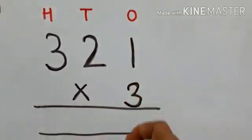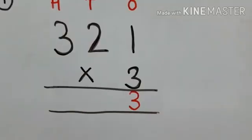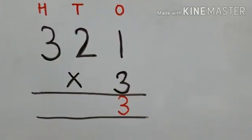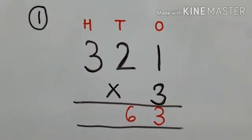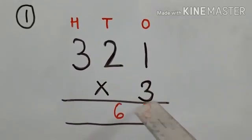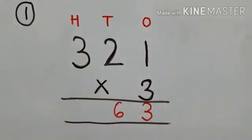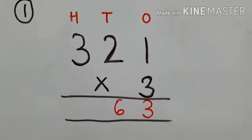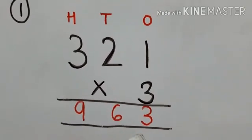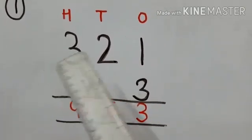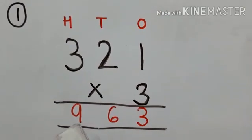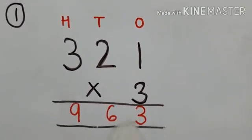We have to do the multiplication first with the ones-digit number. In the ones digit we are having 1, so three ones are 3. Then with the tens-digit number — three twos are 6. And next with the hundreds-digit number that is 3 — three threes are 9. So when we multiply 321 with 3, we get the answer 963.